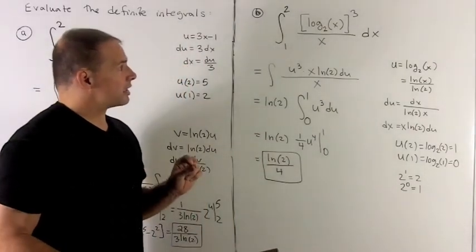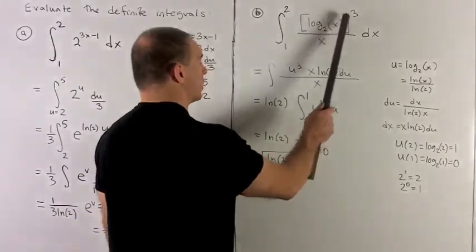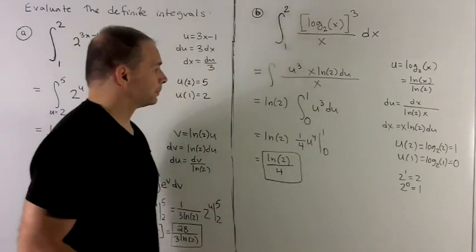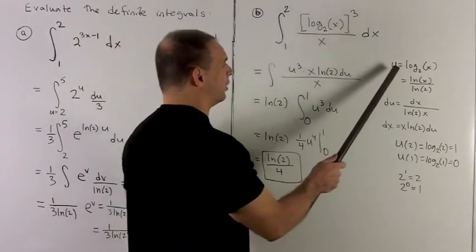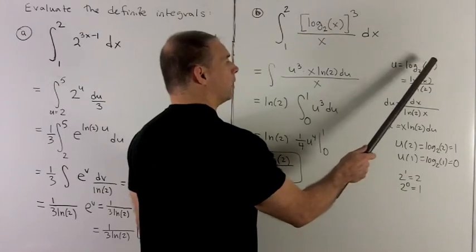We just look at this and we notice that we have a composition going on. The inside of my composition is going to be log base 2 of x. So I'm going to substitute that out. U equals log base 2 of x.